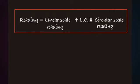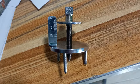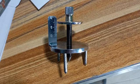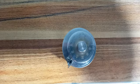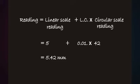Let's see how the measurement is read. Use this equation. In this example, linear scale reading 5, number of circular scale divisions 42. According to the formula, the reading is 5.42 millimeters.